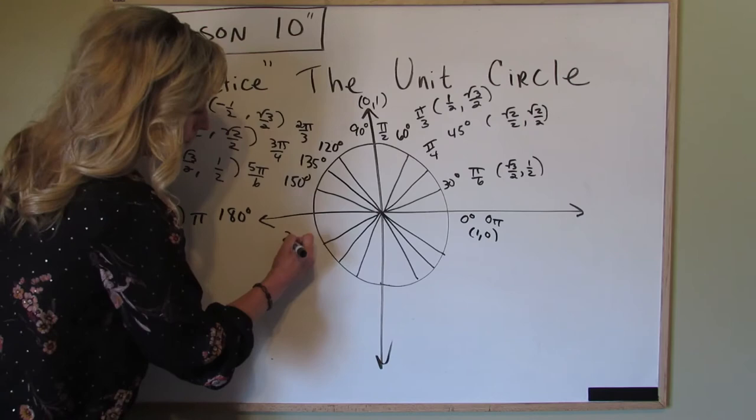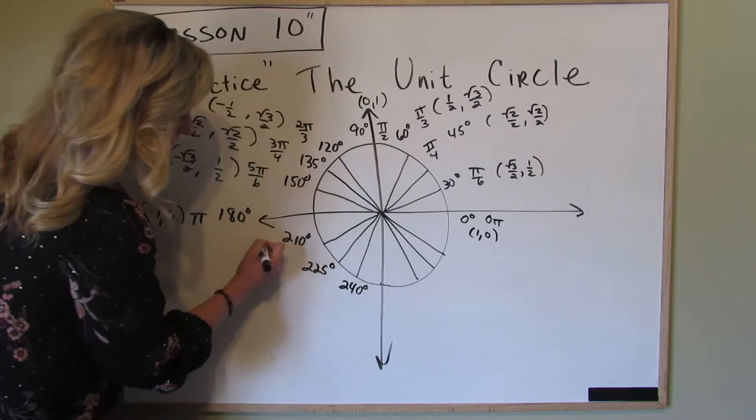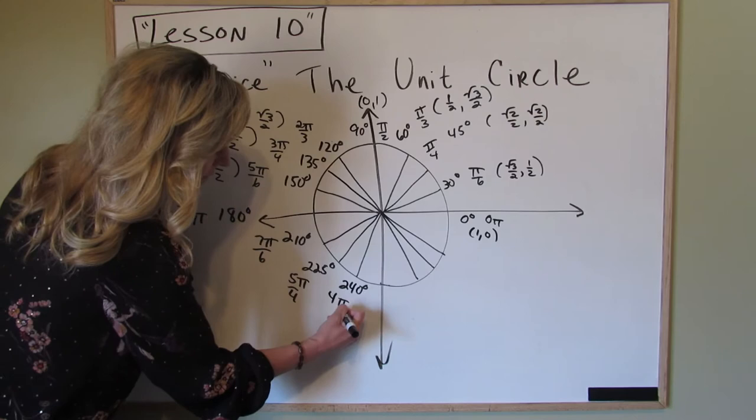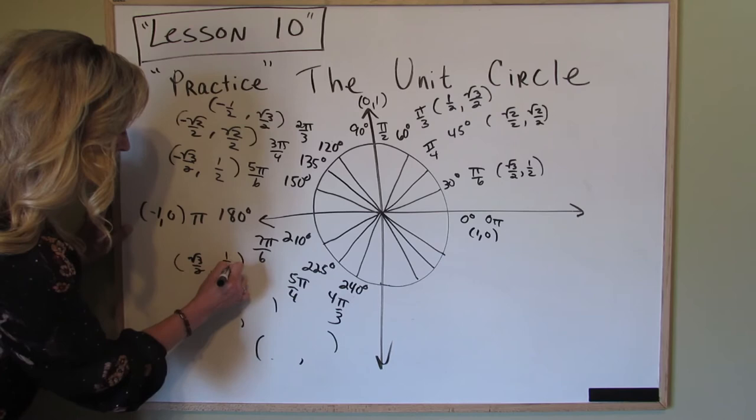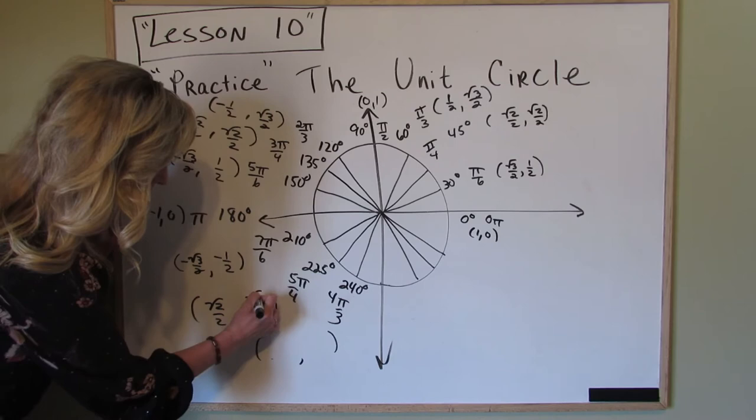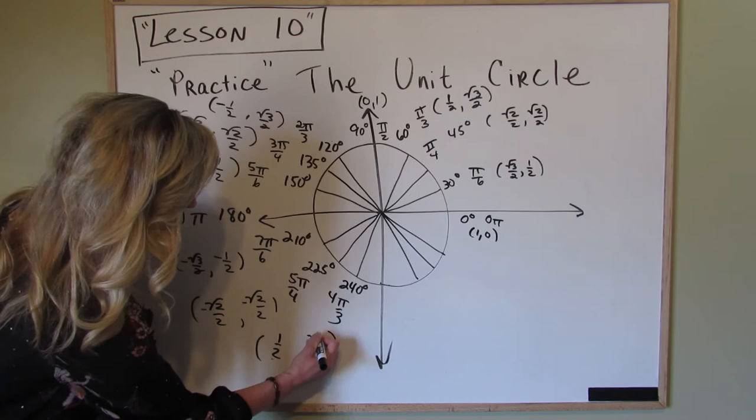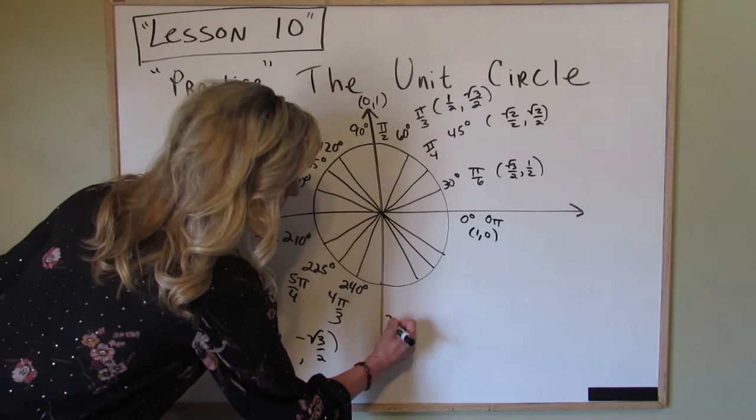Next up is 210, then 225, then 240. In terms of pi: 7 pi over 6, 5 pi over 4, 4 pi over 3. Make them match up: square root of 3 over 2, square root of 3 over 2, 1 half. In this quadrant both are negative. Then I have square root of 2 over 2, square root of 2 over 2, both are negative. Then I have 1 half, square root of 3 over 2, both are negative. And quadrant 3 is done.